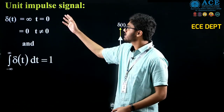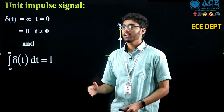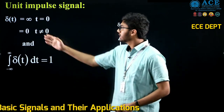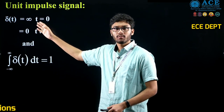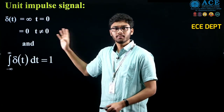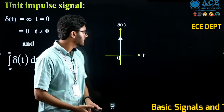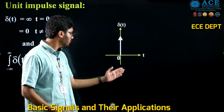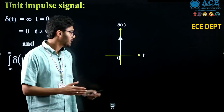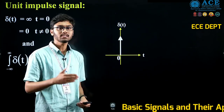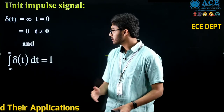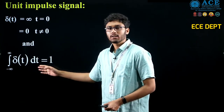First, the unit impulse signal. A unit impulse signal is represented by del(t) and it is defined as: del(t) equals infinite for t equals 0, and del(t) equals 0 for t not equal to 0. Graphically, it is represented like this — at t equals 0, there is an upward arrow, indicating its magnitude is infinite.